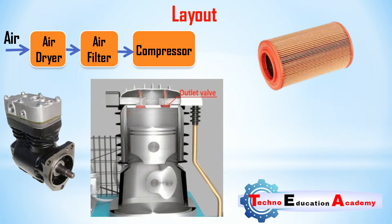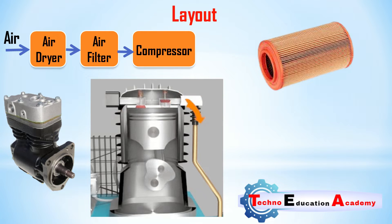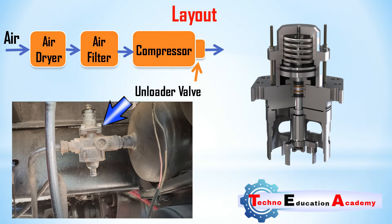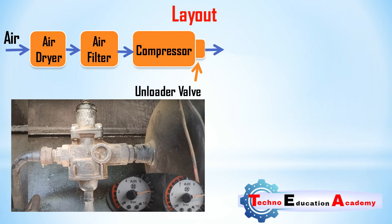This compressor is driven by the engine through a belt drive. The next component is the unloader valve. The compressor sends compressed air to the reservoir through the unloader valve, which gets lifted at a predetermined reservoir pressure and relieves the compressor from load. The basic function of the unloader valve is to relieve the compressor from load whenever the pressure in the reservoir increases.